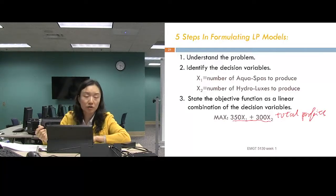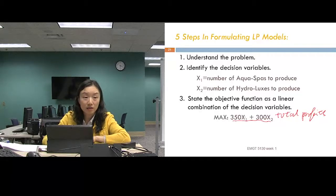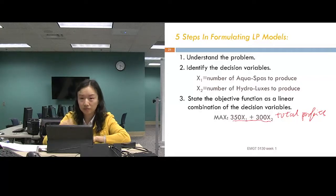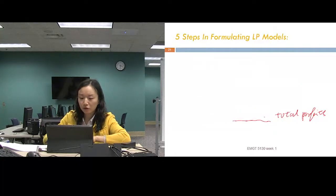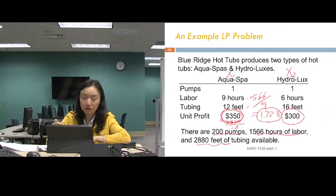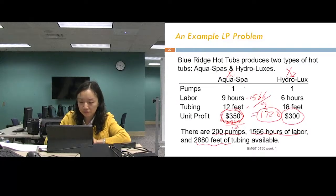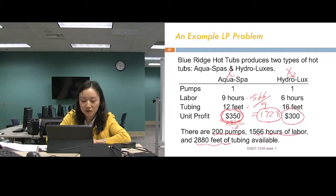This function represents the total profit from producing both models. At this point we don't know how many to produce for each, but we represent those quantities using our decision variables X1 and X2. Then we go to the third component: the constraints. Let's look at the pump constraint first.